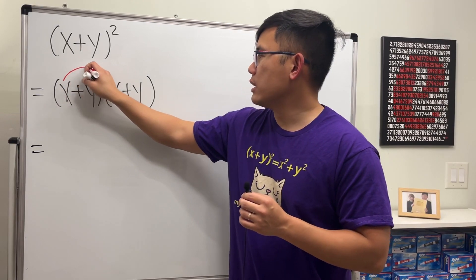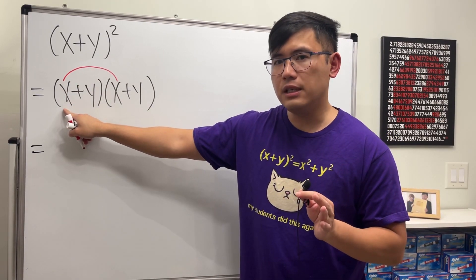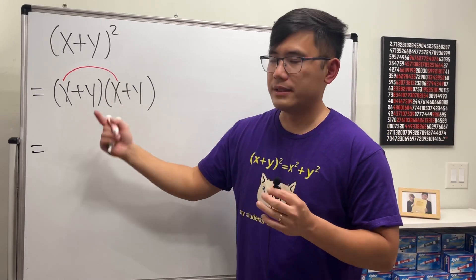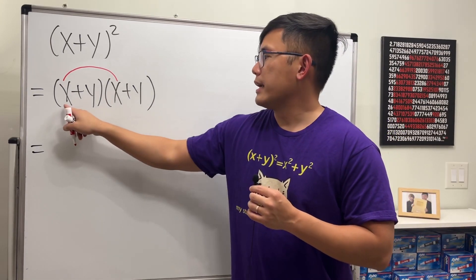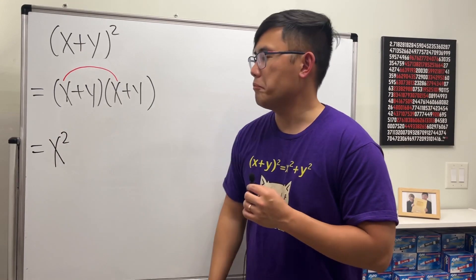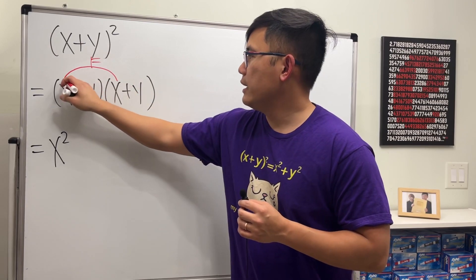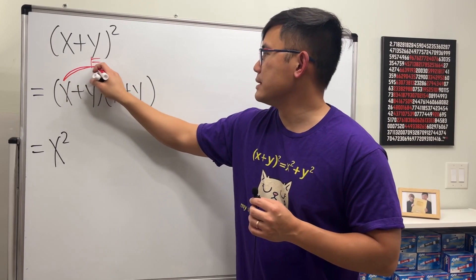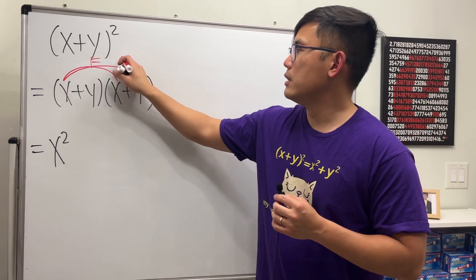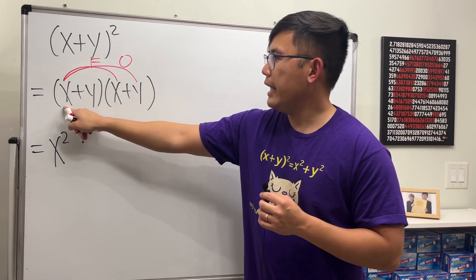F stands for the First term — the first term of the first parentheses and the first term of the second parentheses. So x times x is x squared. Then we take x times y, and that's the Outer term.